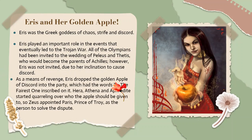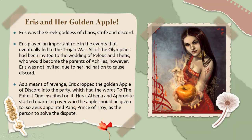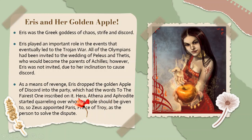Eris was very angry about not being invited, so she took revenge. As a means of revenge, Eris dropped the golden apple of discord into the party, which had the words 'to the fairest one' inscribed on it. Hera, Athena, and Aphrodite — three goddesses — started a quarrel over the golden apple. Each of the three goddesses believed they were the most beautiful, and they started quarreling over who should receive the apple.